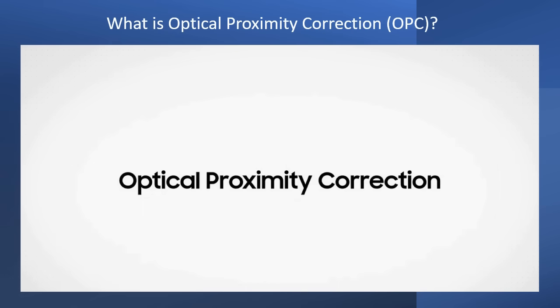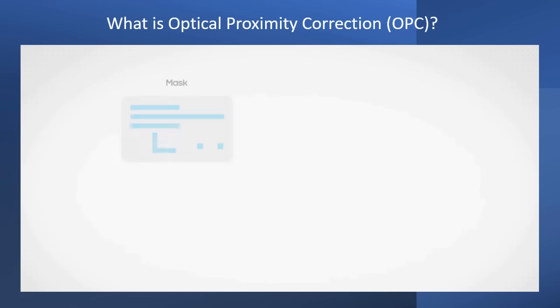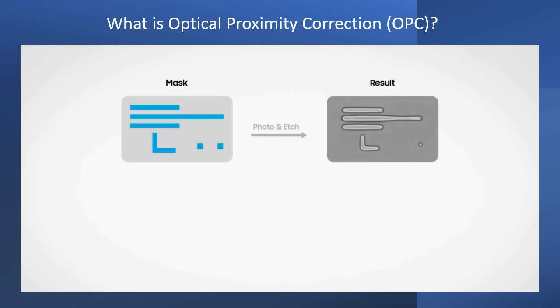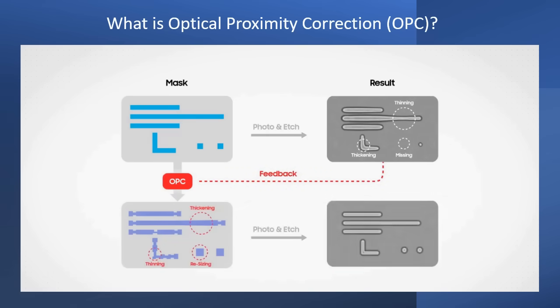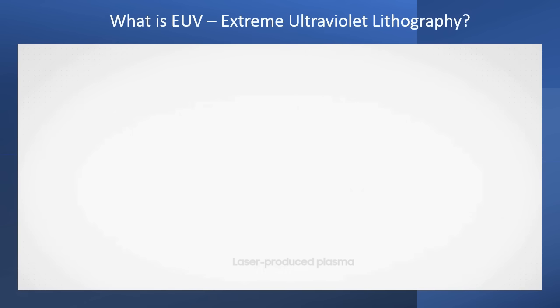OPC is used to adjust mask patterns. During the photo and etching steps, the inherent properties of light can cause patterns on a wafer to be thicker or thinner than the mask pattern. In severe cases, patterns may either completely disappear or merge with adjacent patterns. OPC is used to add or remove shapes on a mask to compensate for those pattern errors.